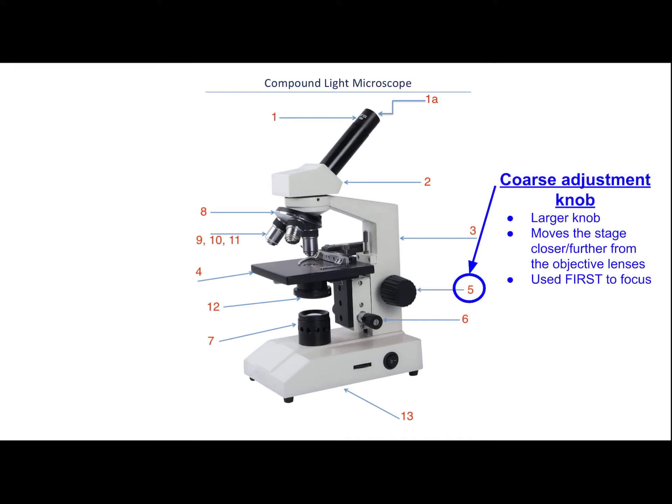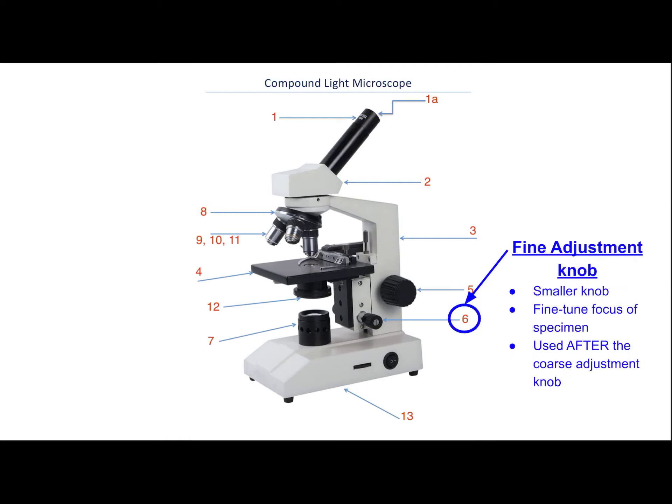Number five: the adjustment knobs. The bigger knob is called the coarse adjustment knob. When you turn this, the stage will move up and down — moving the slide closer to or further from the lenses. You will always use this first, as it moves the image fairly quickly. Use it to get your initial focus. After that, if you need a tiny adjustment, use the smaller knob — the fine adjustment knob — to fine-tune the focus of your specimen.